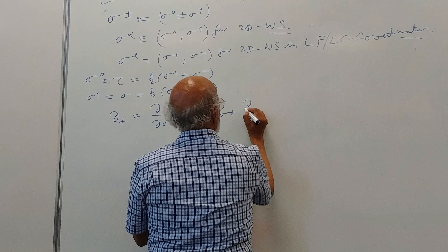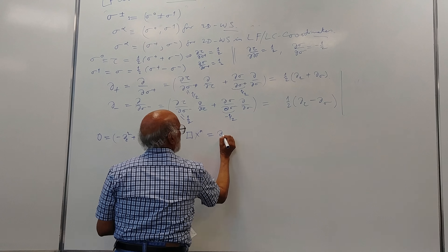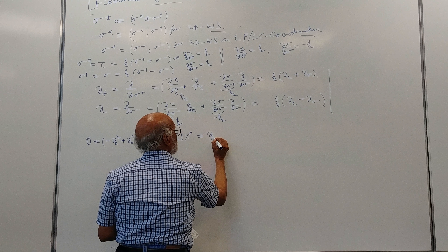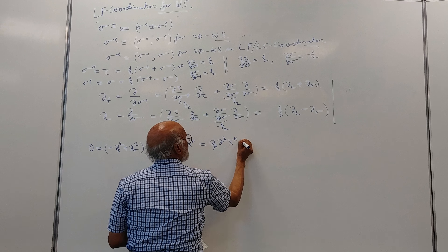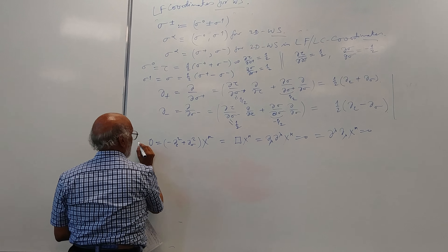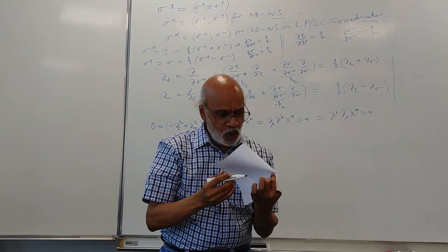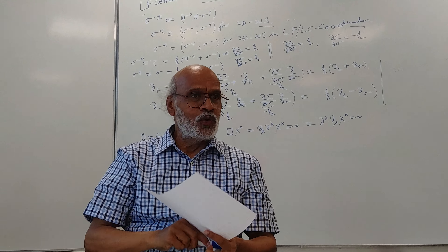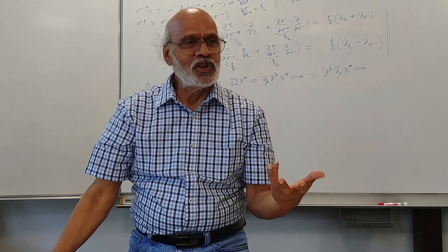I just want to first state the result and will derive it shortly. Our equation of motion, for example (del_tau squared plus del_sigma squared) x_mu, whatever equation of motion for the worldsheet, is also equal to del_lambda del_lambda x_mu equal to zero.